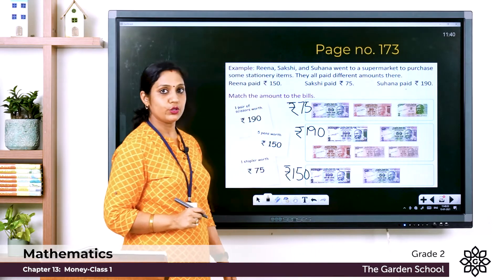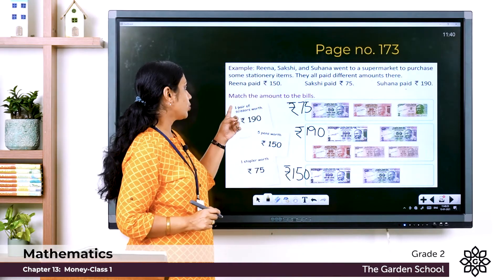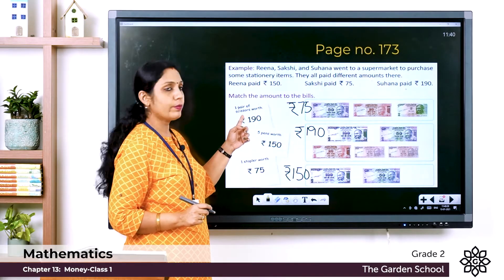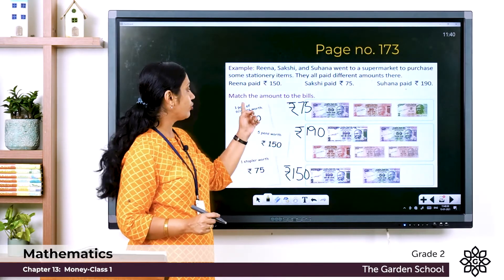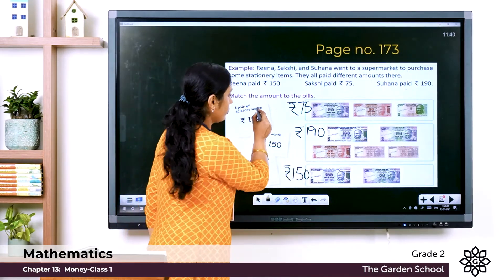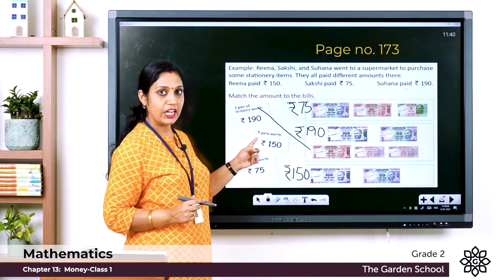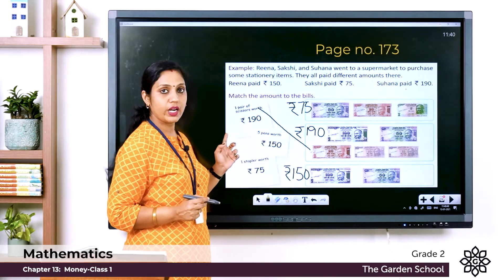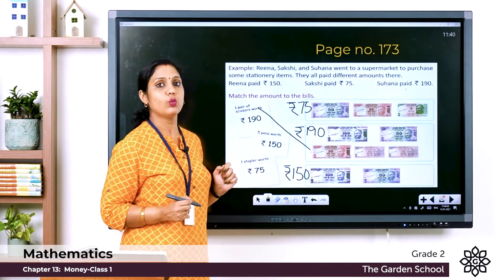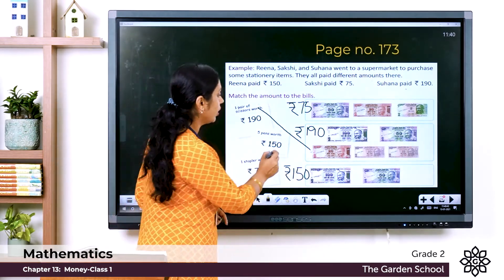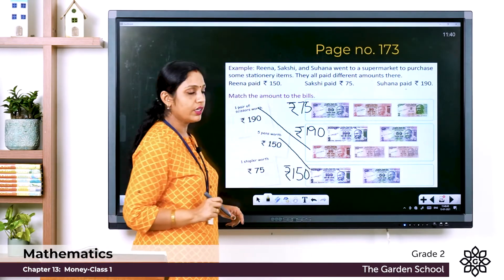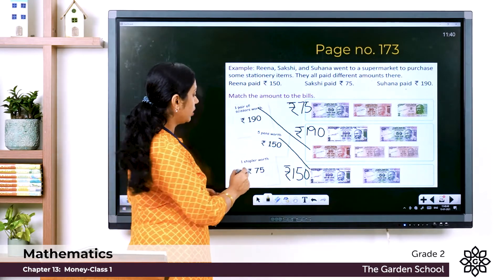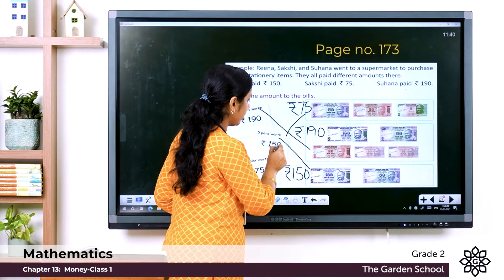Now it's easy to match. One pair of scissors worth rupees 190 — match it to the 190 combination. Five pens worth rupees 150 — draw a line to the 150 total. One stapler worth rupees 75 — draw a line to the 75 total.